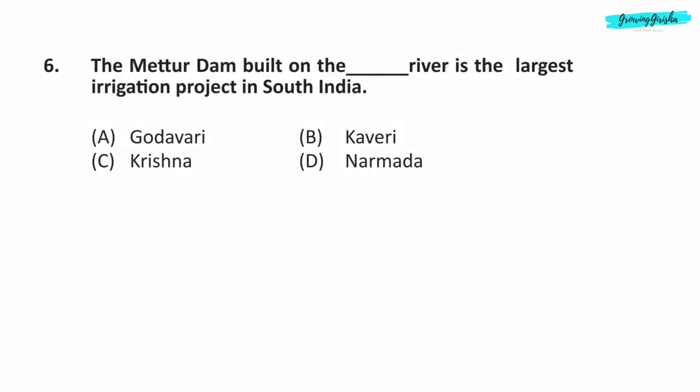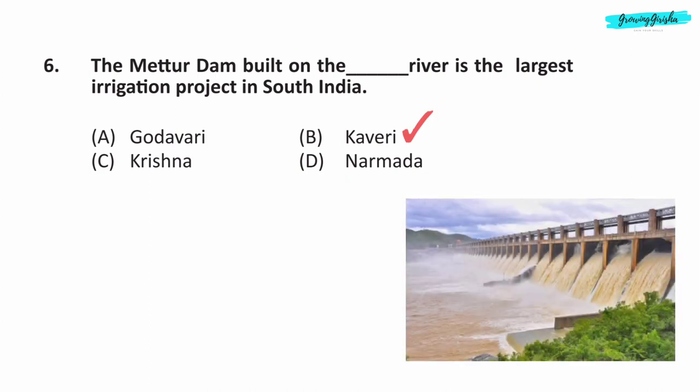Question 6. The Mettur Dam built on the Cauvery River is the largest irrigation project in South India. Question 6, option B — on River Kaveri.